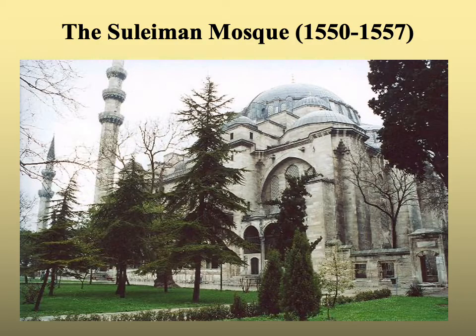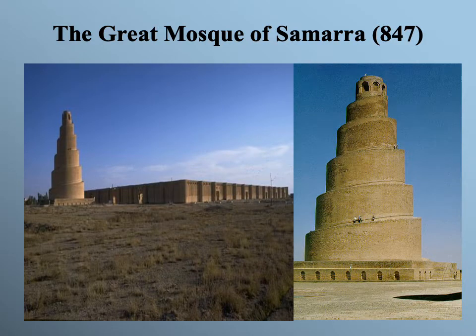Ottoman mosques are probably the most well known structurally. When we envision a mosque in our minds, very often it resembles an Ottoman structure — more than one minaret and a lot of domes, small and large, piled on top of each other. But very often the structure a mosque took would reflect the time and place of its construction. Here we see the Great Mosque of Samara from 847 in northern Iraq, structurally resembling architectural features going back to the ancient Mesopotamians. The minaret here almost looks like a rounded ziggurat and is very prominent — the largest part of the mosque.